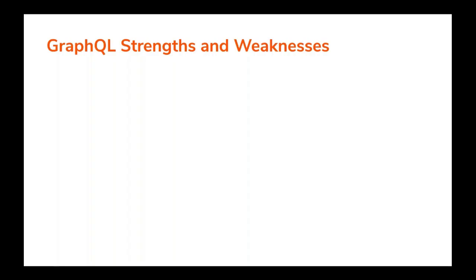Now let's look at the strengths and weaknesses of GraphQL. No more overfetching and underfetching. A REST endpoint will often give you more information than the client needs — this is called overfetching. In GraphQL, the client will not get any additional information beyond what it requested. For underfetching, a client normally has to call multiple REST endpoints to get all the required data. In GraphQL, this will not happen since the client can request everything it wants in one go. Therefore, GraphQL solves both overfetching and underfetching.